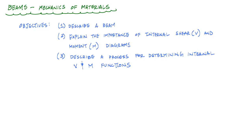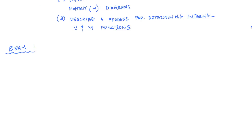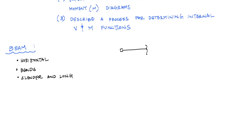The first thing we want to do is define what a beam is. Many of you would probably say a beam is something that is horizontal, it bends, and it's slender and long. Generally speaking you'd be correct, but we want to go a little further. Just like people, beams want to be defined by what's going on on the inside — by their content and character.